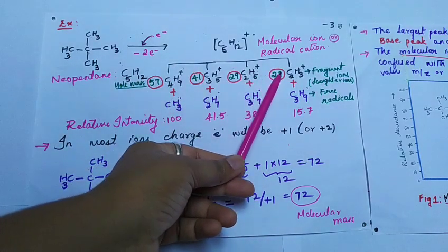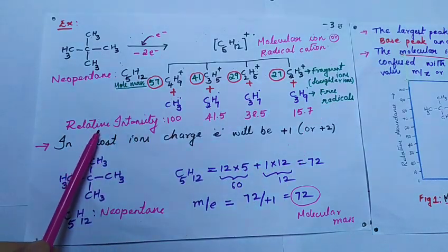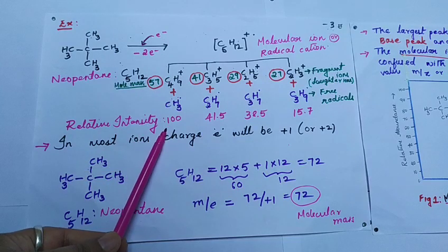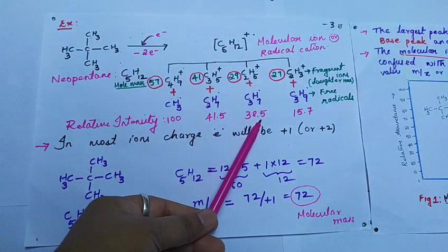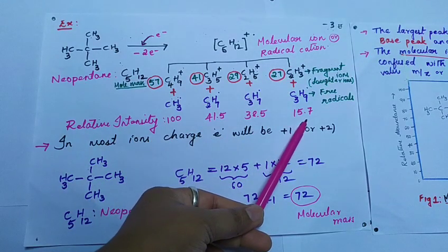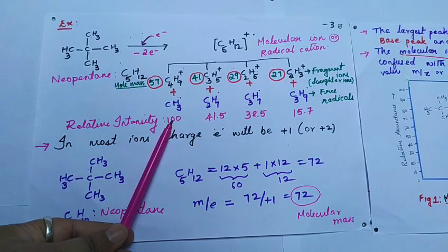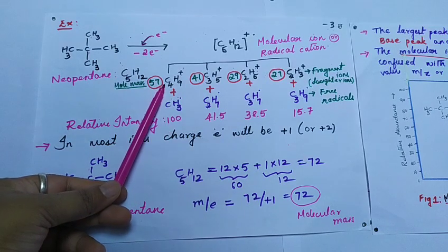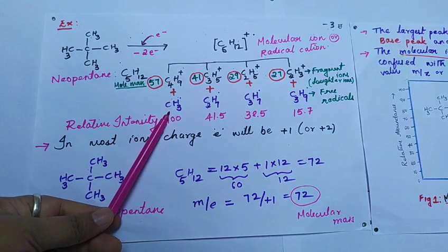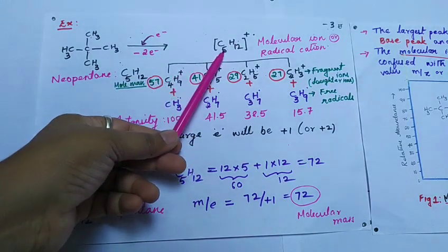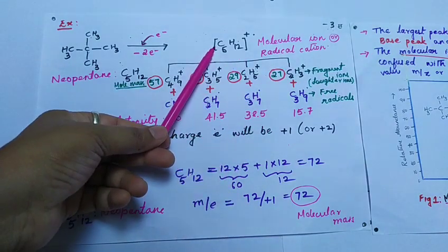These are the respective masses of the fragment ions. Along with the fragment ions, there is formation of free radicals also. Comparing the intensities, C4H9+ cation is 100%, C3H5+ is 41.5%, C2H5+ is 38.5%, and C2H3+ is 15.7%. The abundance of C4H9+ cation is highest at 100%. If you add the cation and the free radical, for example C4 plus C1 gives C5 and H9 plus H3 gives H12, you will get back the molecular ion itself each time.